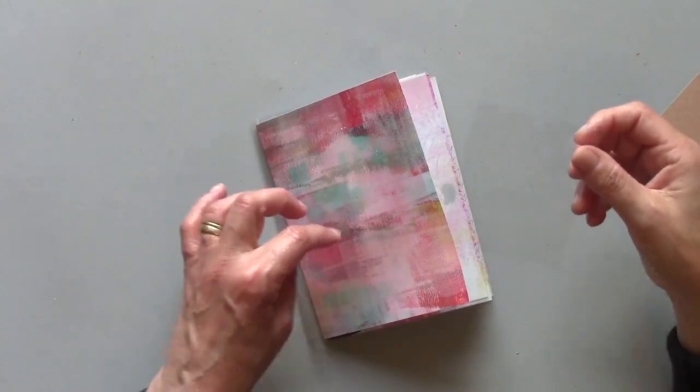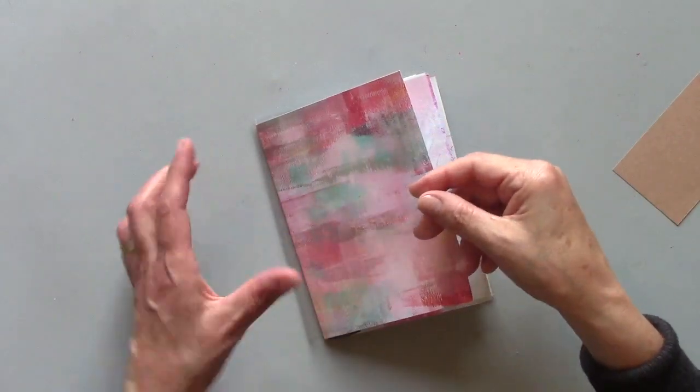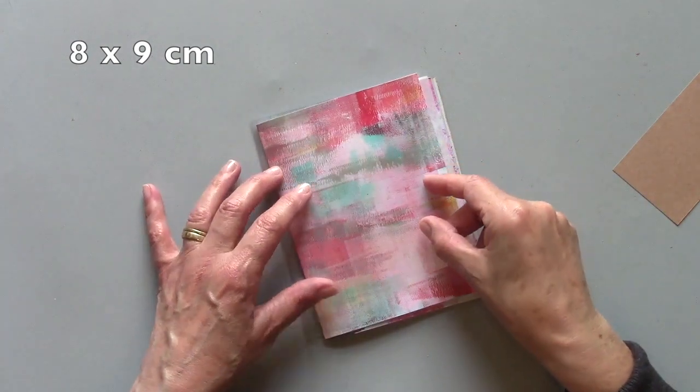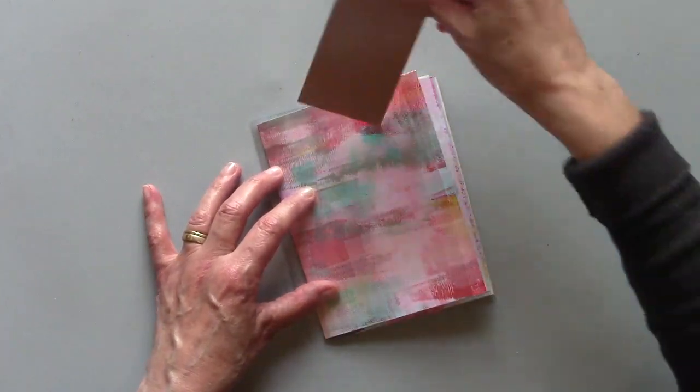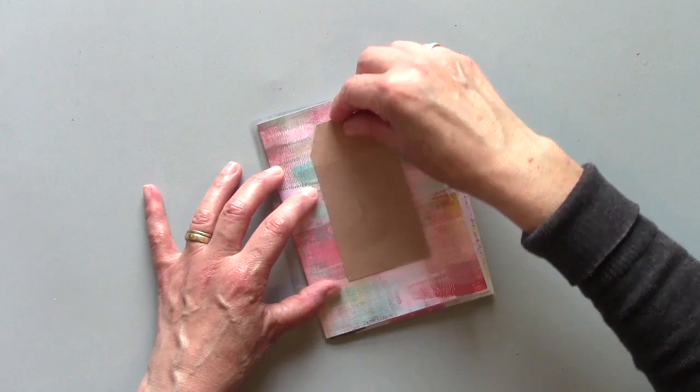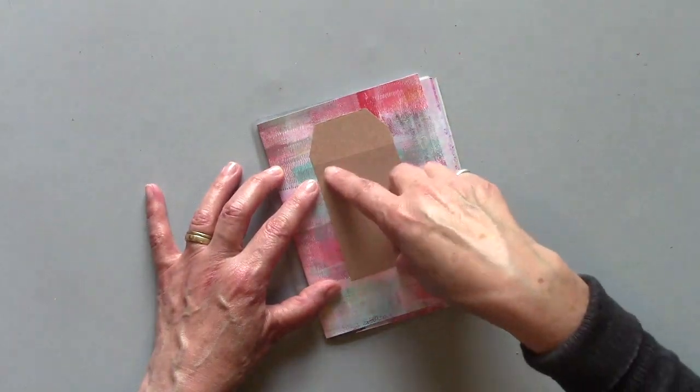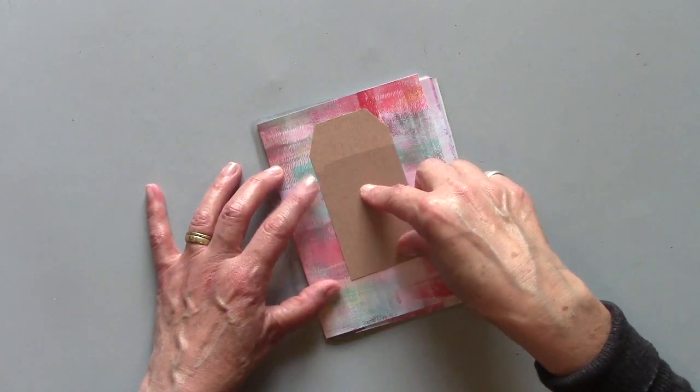I'm going to add a pocket on the front of mine. I've cut a piece to measure eight centimeters by nine, which I'm going to put on the front, and that's wide enough for this tag to sit inside and also for the little magnetic name badge that I'm going to add.